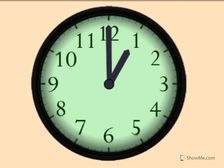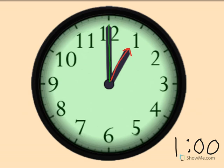1 o'clock. Show me 1 o'clock on your clock. The little hand tells the hour. The little hand is pointing to the 1. The big hand tells the minute. Big hand straight up is o'clock.